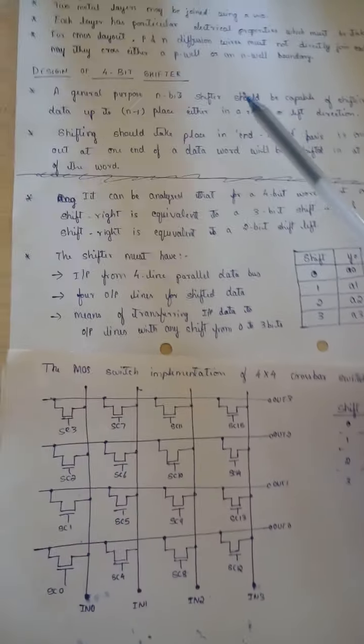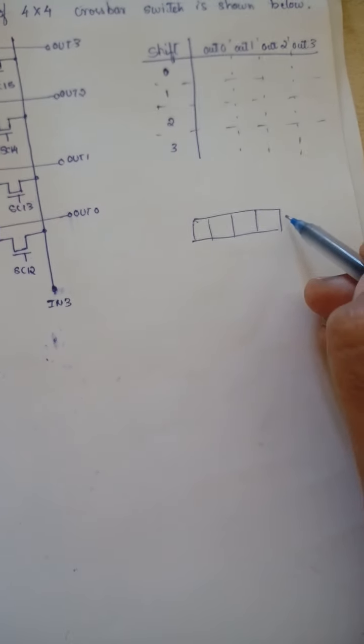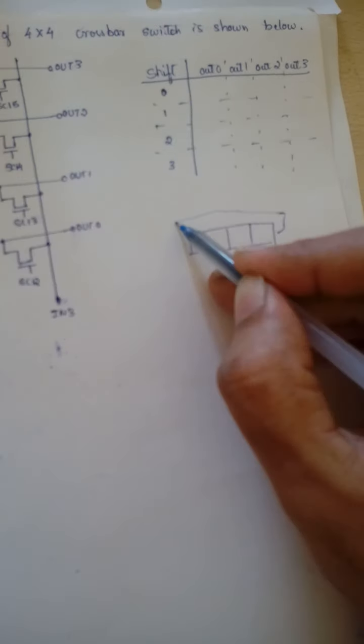A general purpose n-bit shifter should be capable of shifting n incoming data up to n-1 places either in a right or left direction. So in this case we will be doing the design of a 4-bit shifter, but if it is a general n-bit shifter — whether 2-bit, 3-bit, 5-bit or any n-bit — it should be capable of shifting n incoming data. So if it is a 5-bit shifter, it should shift 5 incoming data up to n-1 places, that is up to 4 places, either in a right direction or a left direction.